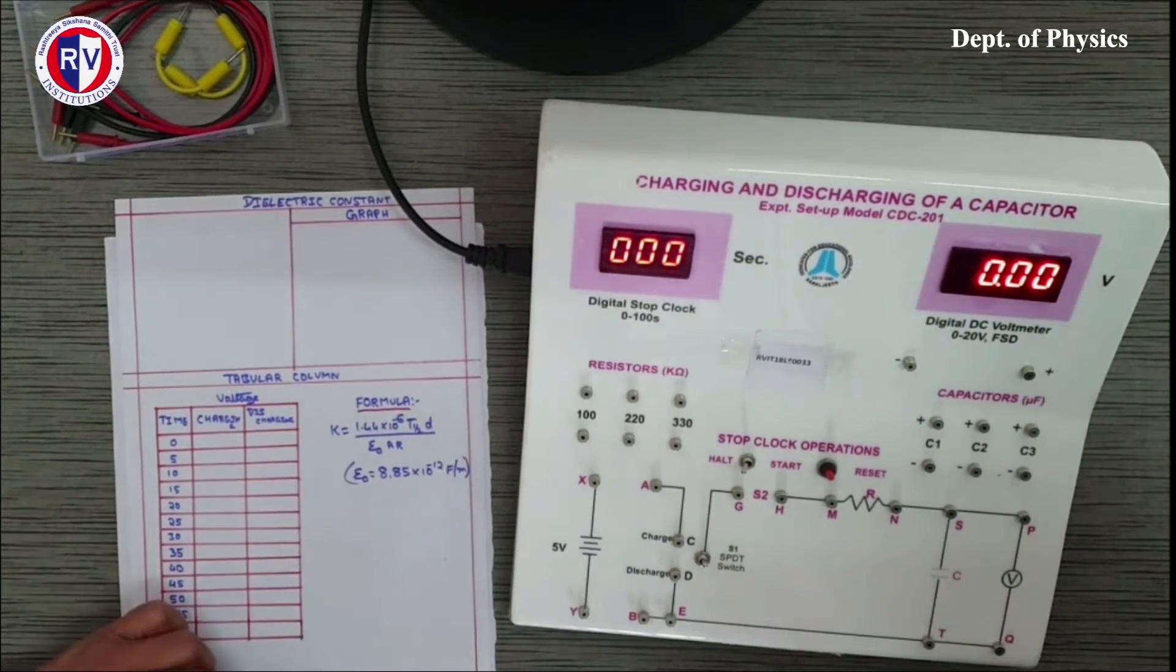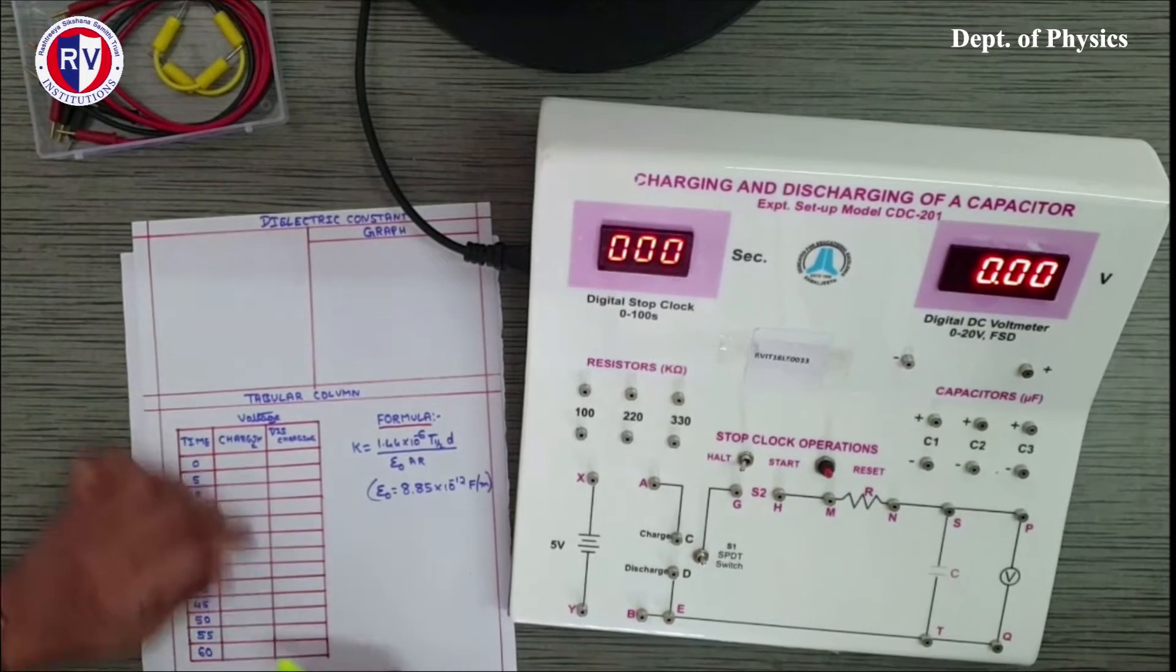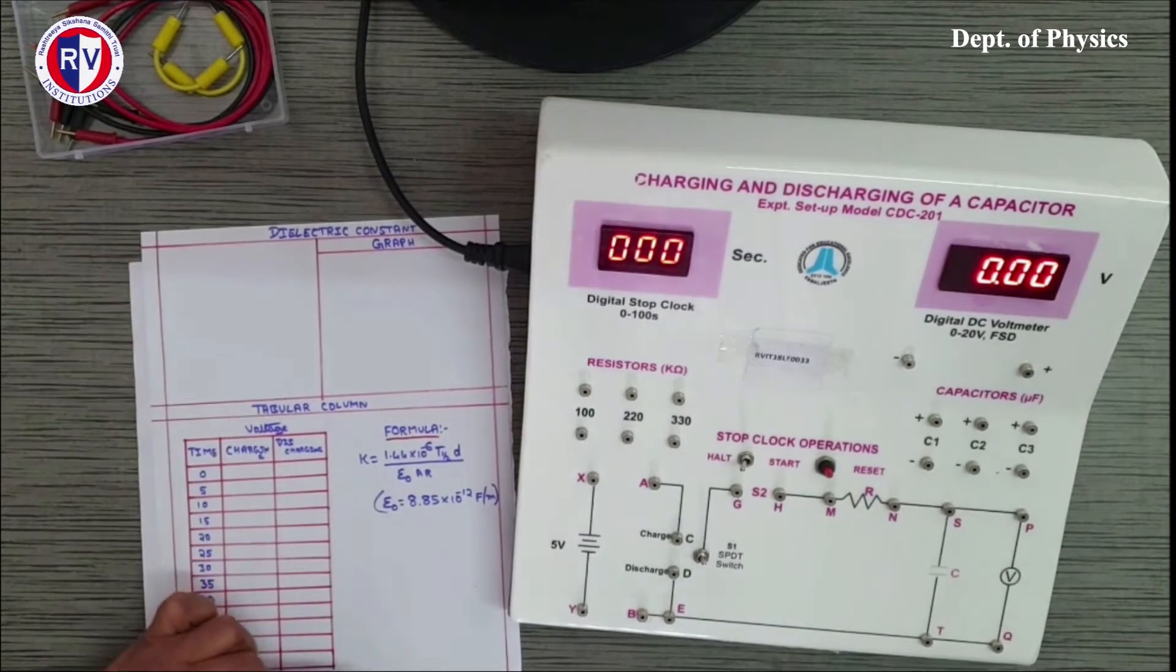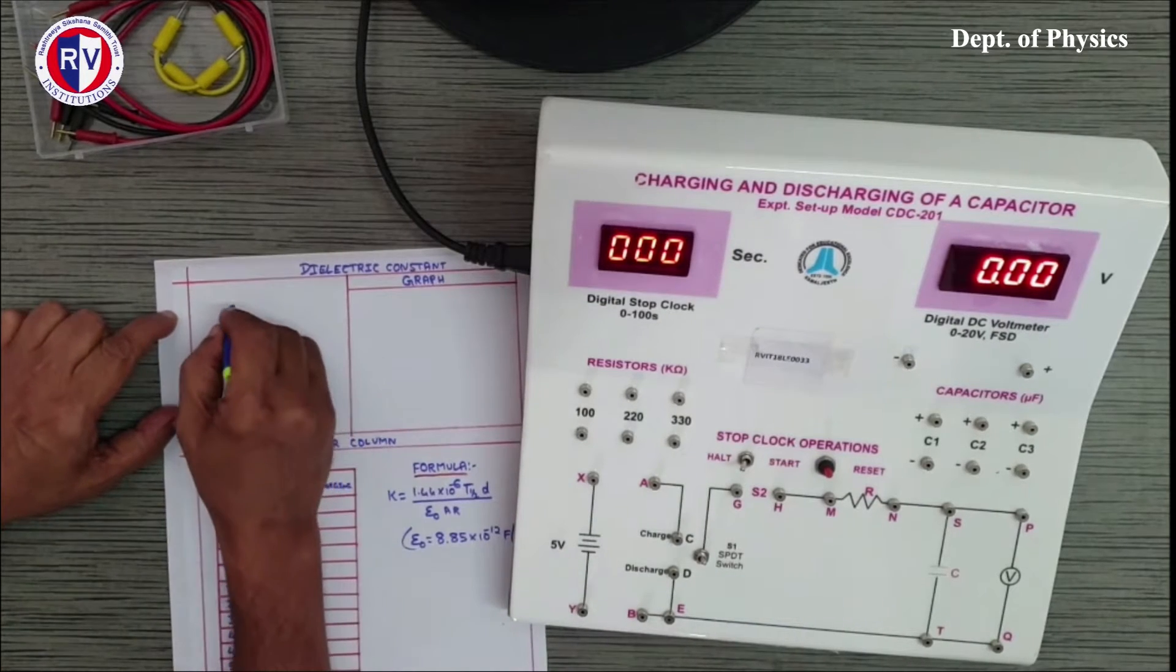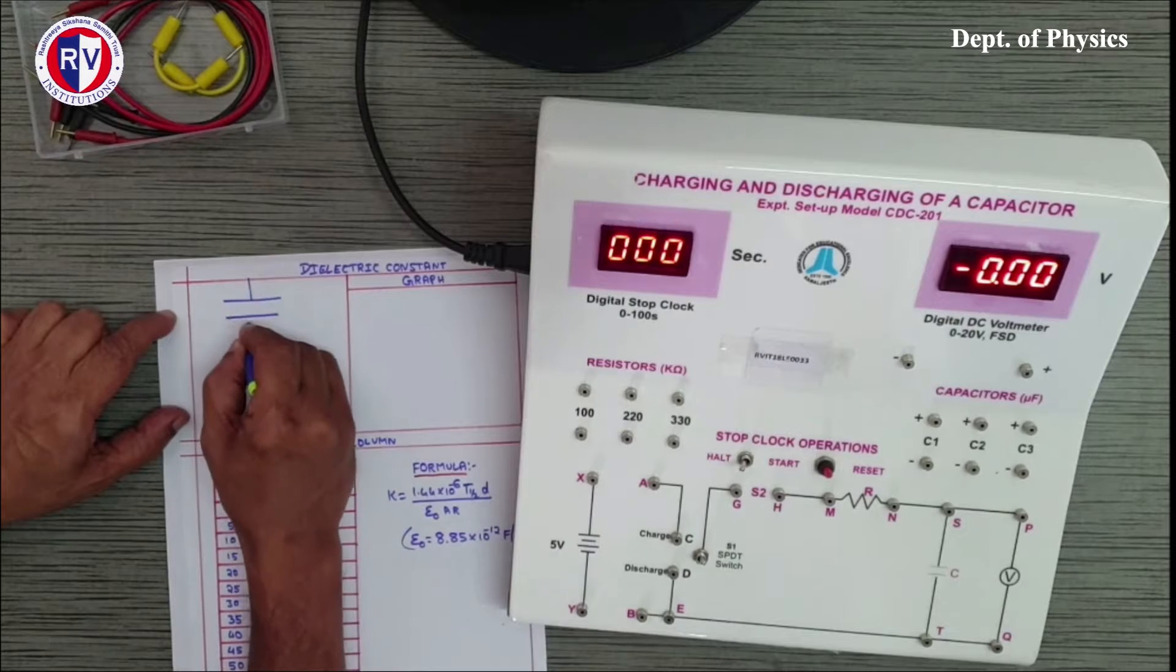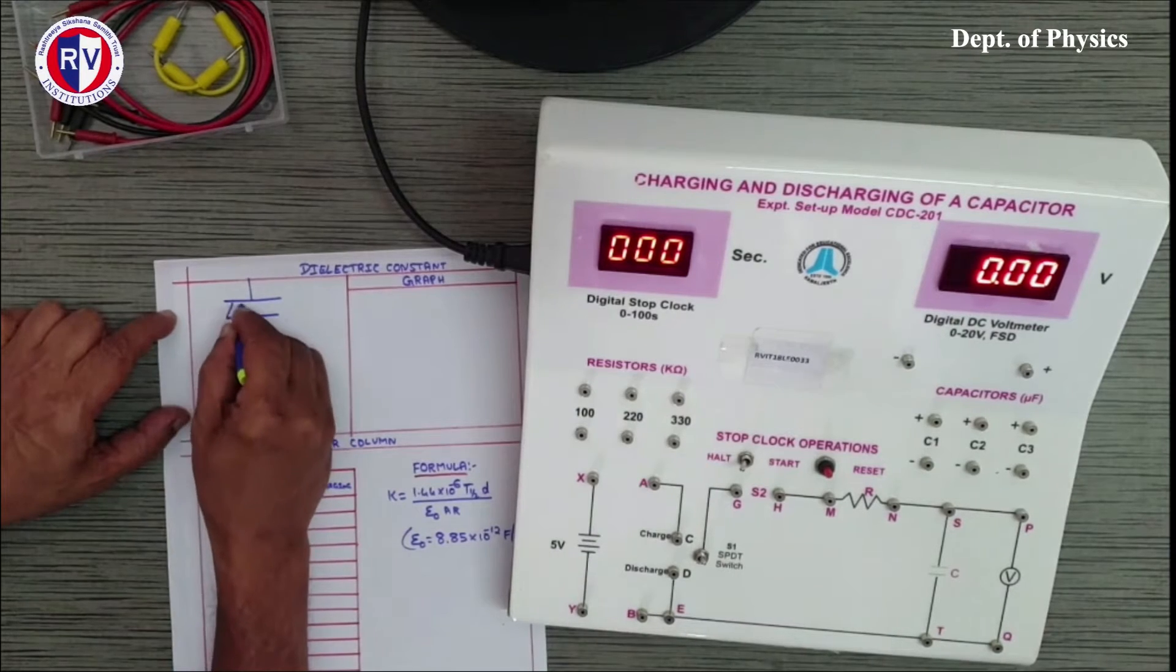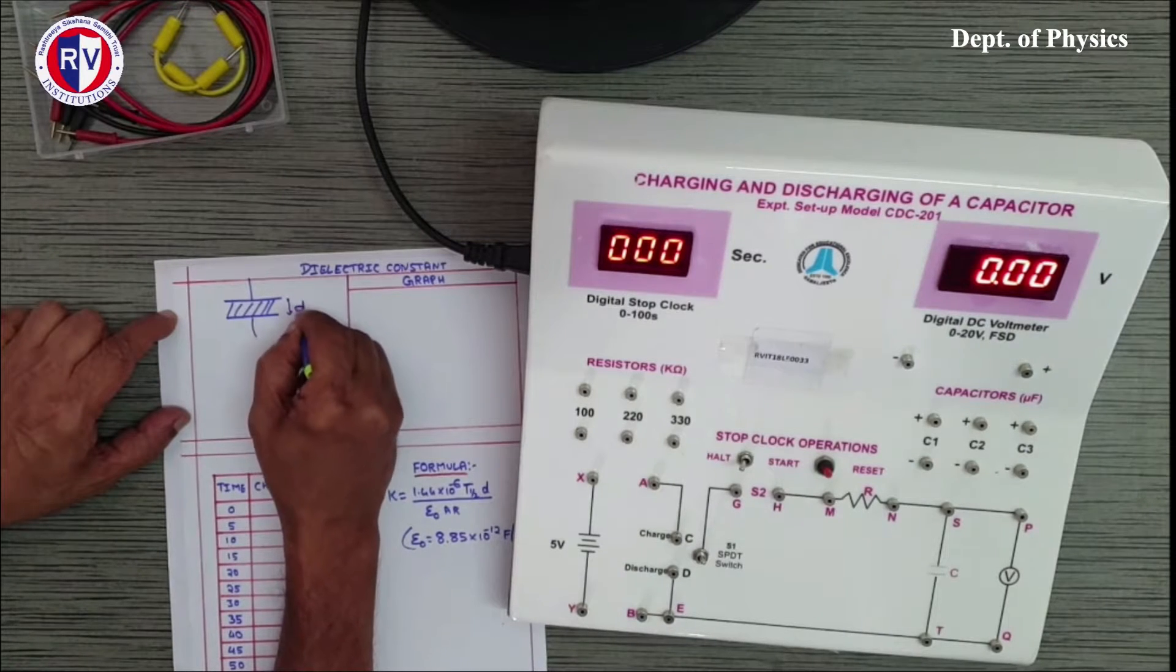Hello, today we will discuss an experiment to find out the dielectric constant of material. Dielectric, as you know, is the medium placed in between the plates of a capacitor. It will be like this. The thickness of the dielectric in this case is small t.